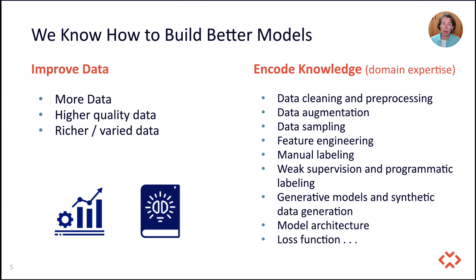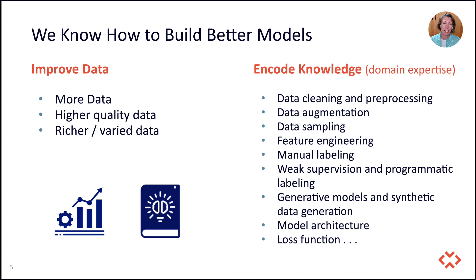If we're looking at improving data, that is very aligned to data-centric AI, where we are trying to increase the quality of our data and get richer data in order to get better results. And if we look at encoding knowledge, we're already doing that today in many different ways: data cleansing, data sampling — if we're telling the models what to look at, we are encoding our own knowledge of what's important. More advanced methods include feature engineering, manual labeling, and weak supervision, where you're generating synthetic data for your model — all ways to encode knowledge.